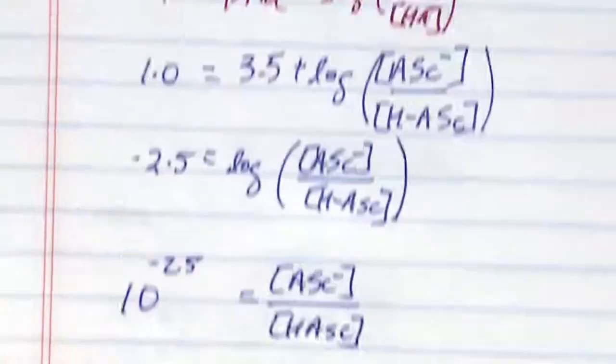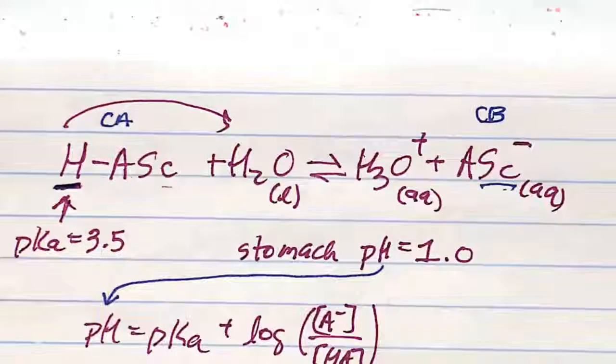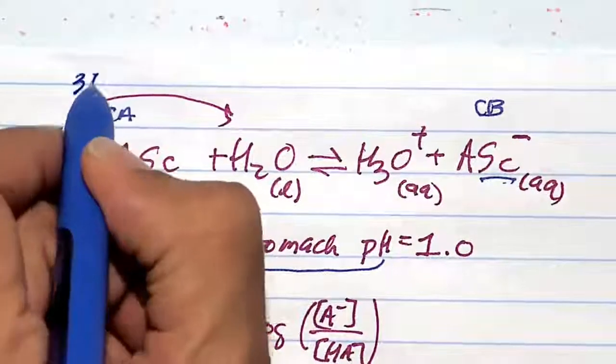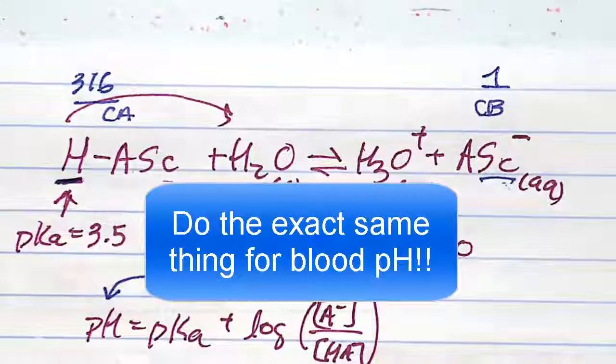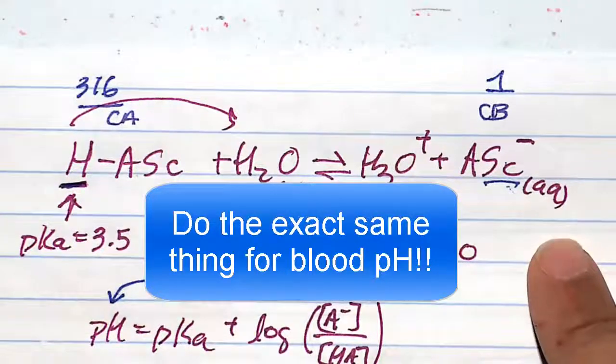So in a pH 1 of the stomach, I'm going to have 316 more of the protonated form of salicylic acid for every one form of the conjugate base acetylsalicylate.